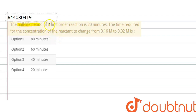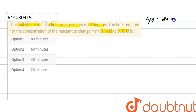The question is: the half-life period of a first order reaction is 20 minutes. The time required for the concentration of the reactant to change from 0.16 to 0.02 is to be found. The given data is: half-life is 20 minutes, initial concentration is 0.16, and concentration at time t is 0.02.